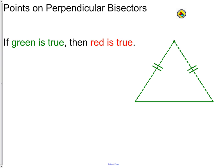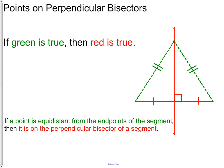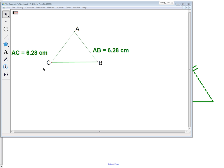Now another statement about perpendicular bisectors — this is the converse: if a point is equidistant from the endpoints of the segment, then it is on the perpendicular bisector. This would be the converse of the statement we just made.